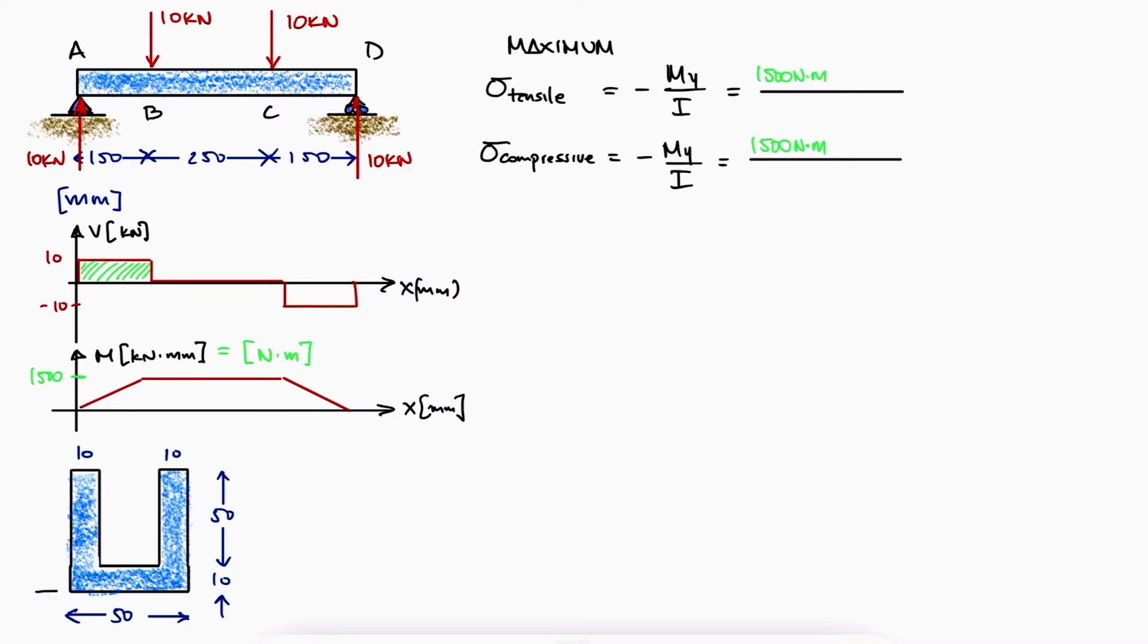To do this, we'll use the base as our datum or point of reference, split the cross section into simpler geometries and do what is effectively a weighted average of the distance to the centroids.